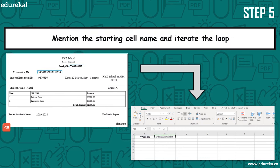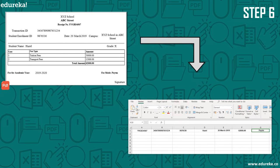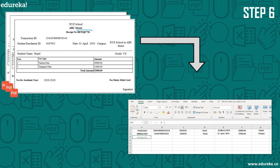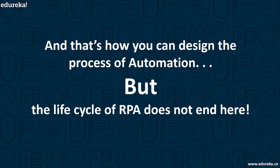You can mention the starting cell name, for example A1, and automatically iterate a loop to store the next extracted value of the same invoice in the same row but the next column. Once all the data has been stored for a single file, you define the rules for your bot to iterate for the next file as well — go one cell below and to the beginning of the row of the active cell, then repeat the action of extracting data and storing values in the Excel sheet. This stores the values of all the fields in the designated Excel sheet, and that's how you design the process of automation.